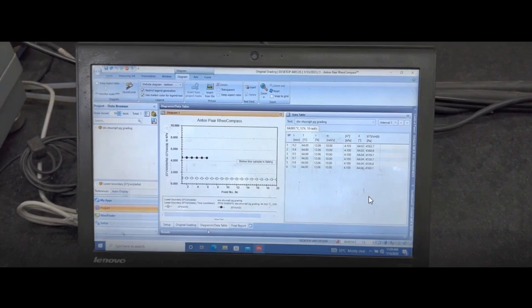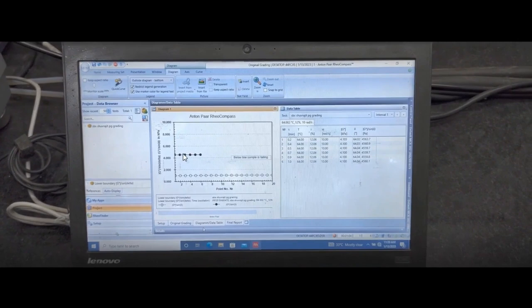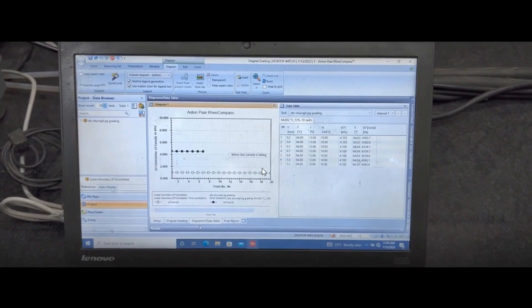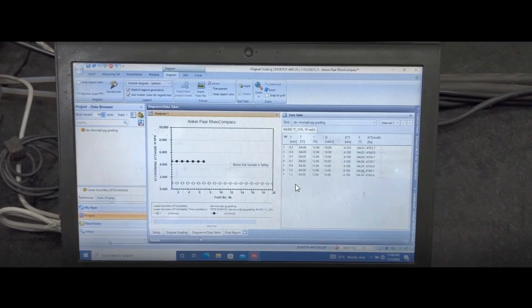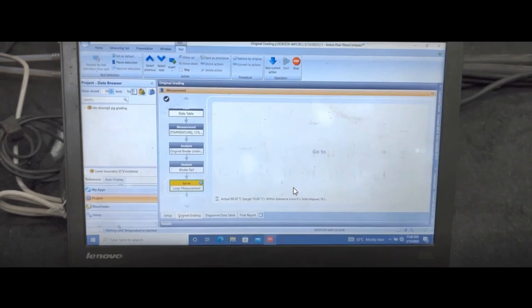You will get average value for G* and average value for G*/sin(δ). Now since these values are much higher than your target value, the software will automatically increase the temperature.